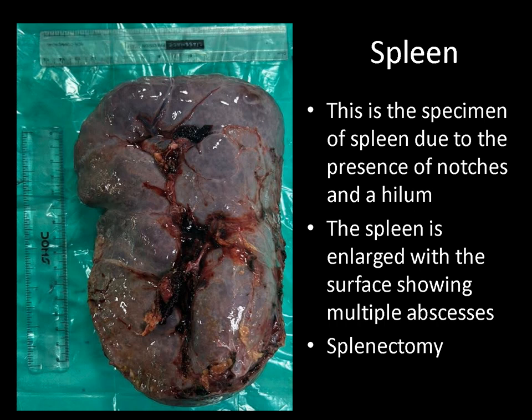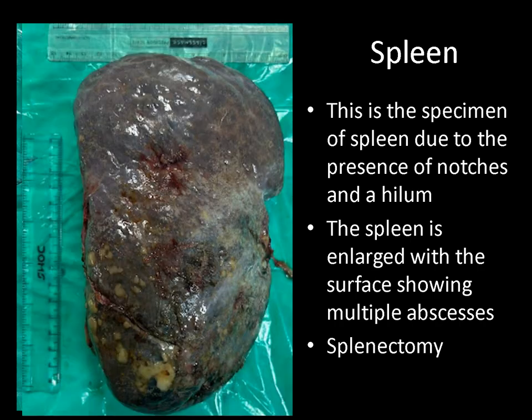This is a specimen of spleen. You can very characteristically see the notches and the hilum of the spleen. This spleen is enlarged in size and on turning the specimen, you can see multiple abscesses on the surface. So this is a specimen of splenectomy done for splenomegaly with multiple splenic abscesses.